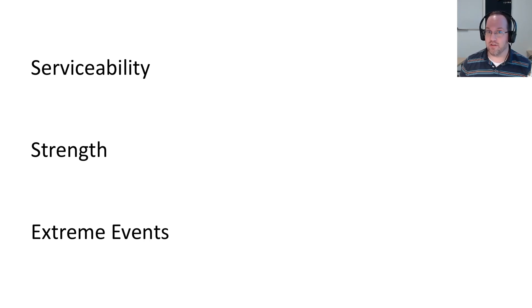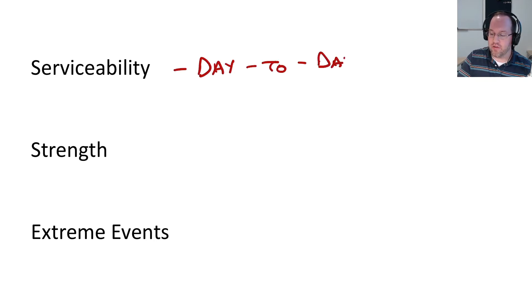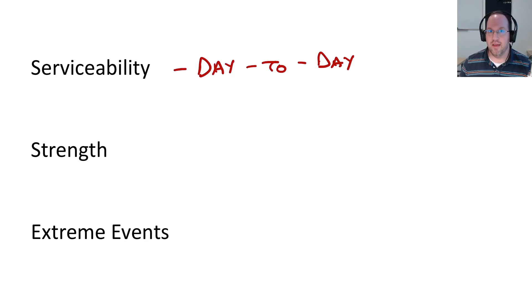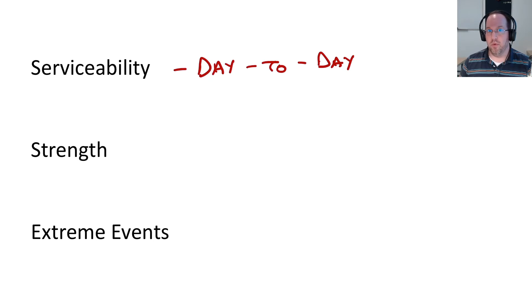Now, given all these loads, there are three main contexts that we can place these in as engineers. First, we'll have to think about serviceability — this is the day-to-day operation of our structure, and we need to make sure it's operating in a serviceable fashion. For the most part, serviceability does not really have a lot to do with safety. Most of it has to do with cracking, corrosion, deflections — things that will impact the ability of that structure to be used, but will not make the structure fall down. These loads tend to be smaller, and we call these service level loads.